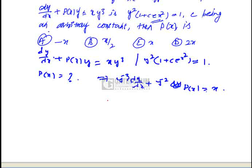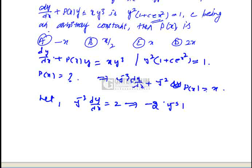Now, to convert it into a first-order differential equation, we let z equal y^(-2). Differentiating, we get minus 2 times y^(-3) times dy/dx equals dz/dx. This can be rewritten as y^(-3) equals minus one-half times dz/dx.